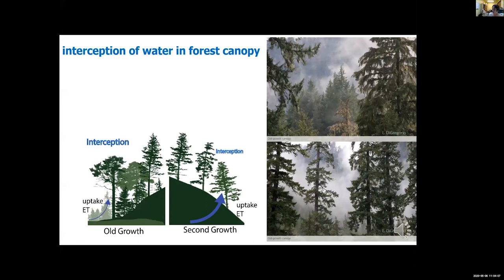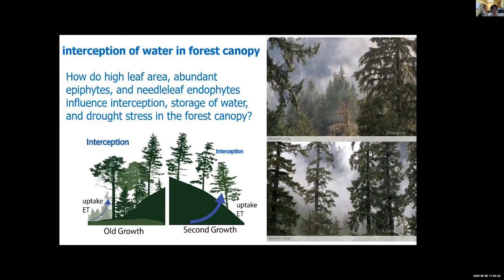In contrast, the canopy of second growth is simpler and has less ability to store water. In addition, the second growth forest evapotranspires more water than the old growth. The interaction of precipitation and canopy is not entirely understood, and we don't know what is the role of these epiphytes or endophytes in drought conditions. We also don't know how the canopy-precipitation interaction is going to change with changes in precipitation form from snow to rain.